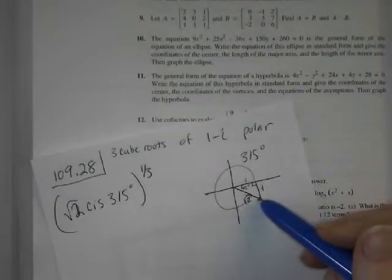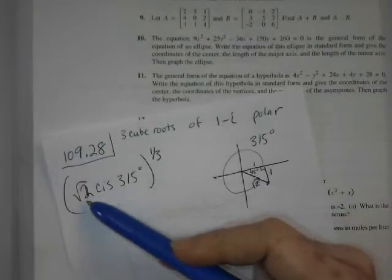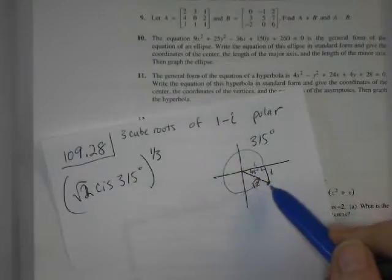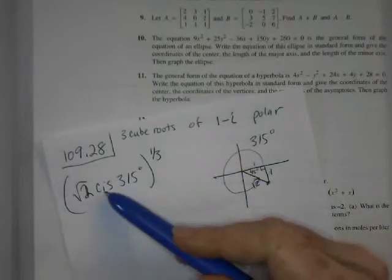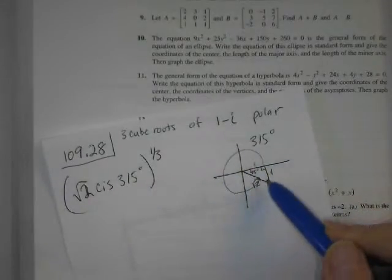So to write something in polar form, it's r cis theta. So r being the radius of the circle, or I often call it the hypotenuse of the triangle, cis and then theta. So that's 45, so around this way would be 315.